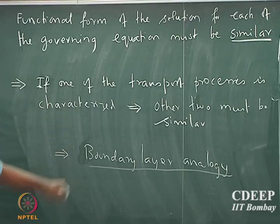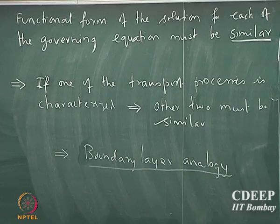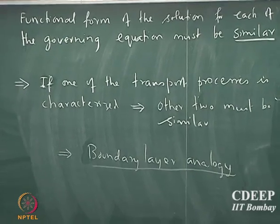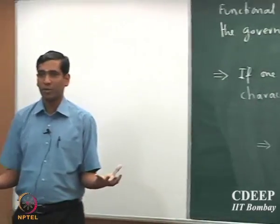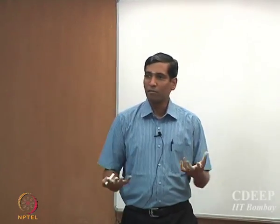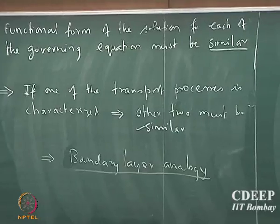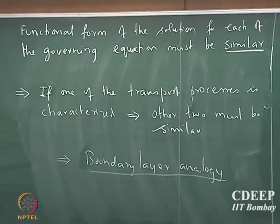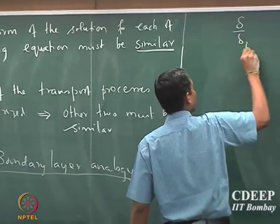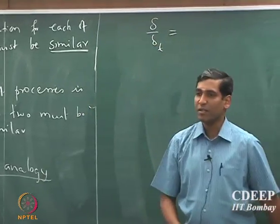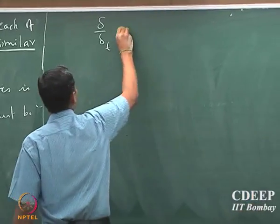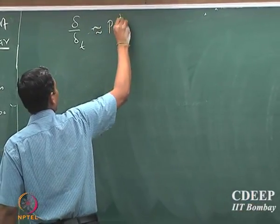We are going to capitalize on this observation that the functional form is similar and we are going to identify how to relate these three transport processes. And therefore, by characterizing one of them, we should be able to characterize the remaining. Because we said that delta by delta-T, which is the ratio of the boundary layer thickness, scales as Prandtl number to the power of n.